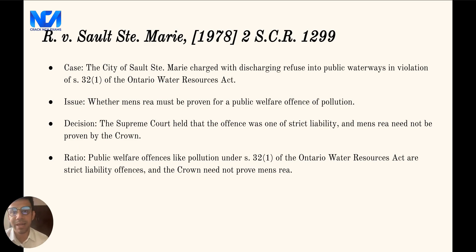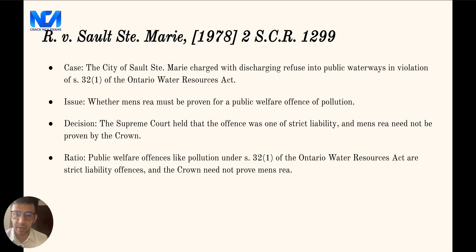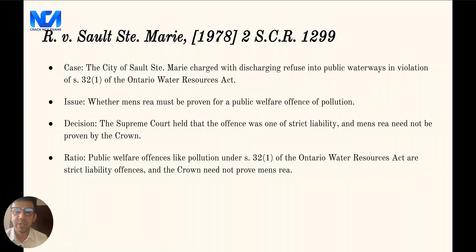The first case law is Sault Ste. Marie. This case involved a charge against the city of Sault for discharging refuse into public waterways which caused pollution. The charge was made under section 32, subsection 1 of the Ontario Water Resources Act. The key issue was whether the Crown had to prove mens rea for a public welfare offense of pollution. The Supreme Court of Canada held that the offense was one of strict liability, meaning the Crown did not have to prove mens rea. Public welfare offenses such as pollution under this Act are offenses of strict liability, establishing that regulatory offenses designed to protect the public are often presumed to be strict liability offenses.